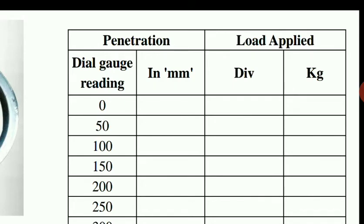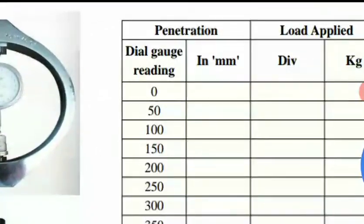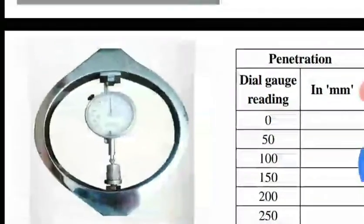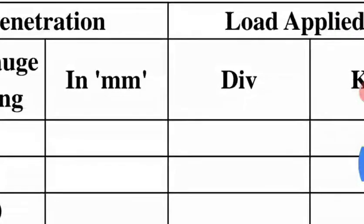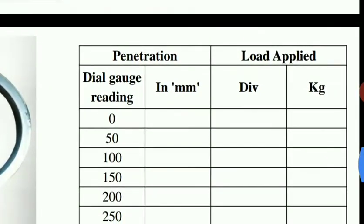For 0 dial gauge reading, the penetration is 0 mm and the corresponding load divisions are noted. For 50 dial gauge readings, which is 0.5 mm penetration, we count the number of divisions and record them. To convert divisions to kg, we multiply by 4.75 kg per division.